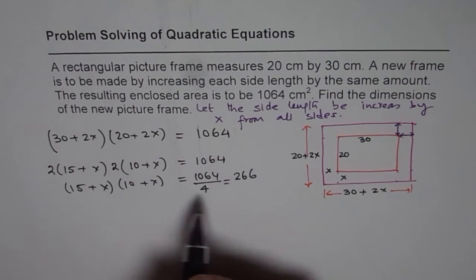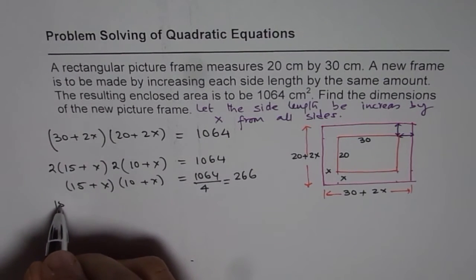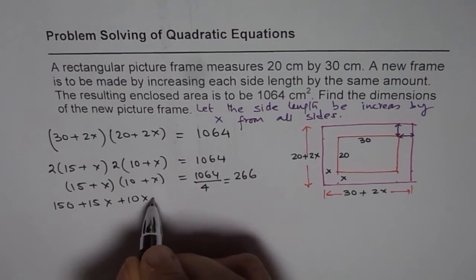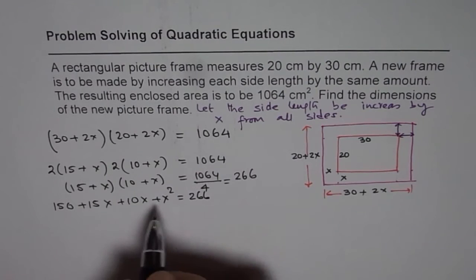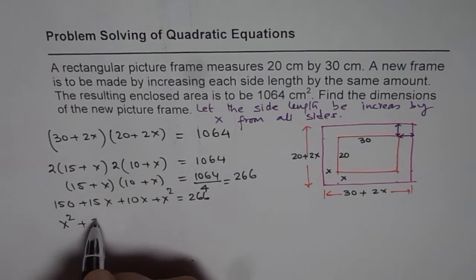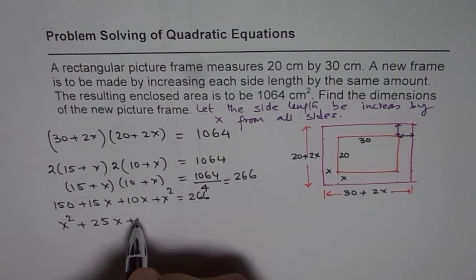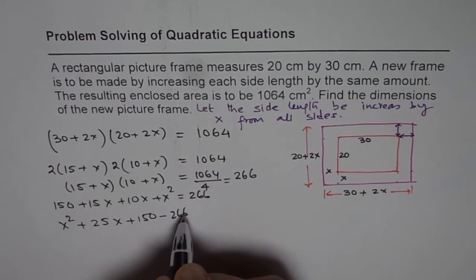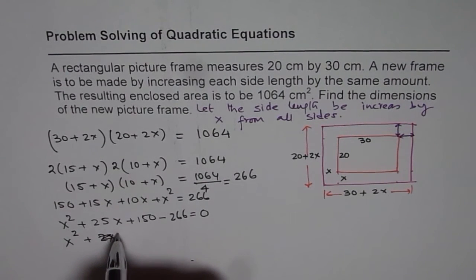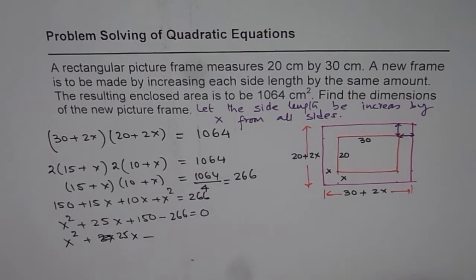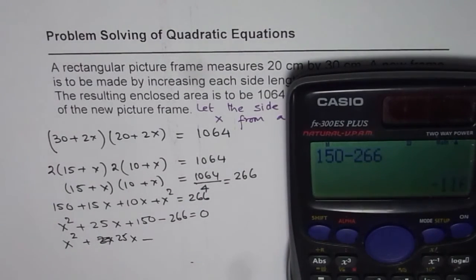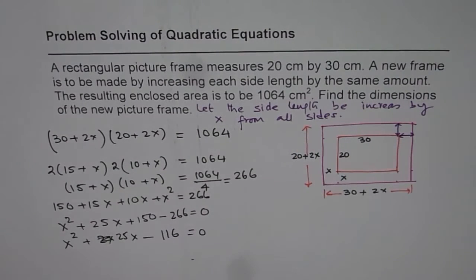Now you can expand and simplify. So 15 times 10 will be 150 plus 15x plus 10x plus x squared equals 266. Bring all the terms together. So we have x squared, 15 plus 10 is 25, so we get 25x. We have plus 150 and minus 266 equals 0. Which could be written as x squared plus 25x, and 150 minus 266 is minus 116 equals 0.